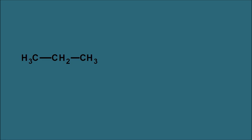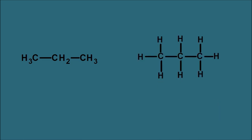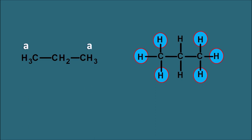We need to identify the different types of protons and their environment. When we expand the propane structure we can observe different types of protons attached to the carbon. These are the methyl protons at both terminals. The other terminal also shows methyl protons, and these two protons in the middle are methylene protons, indicated by letter B.